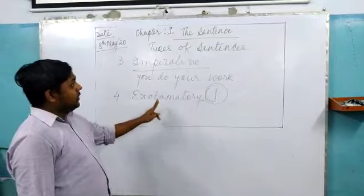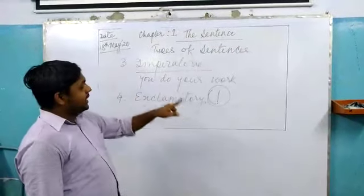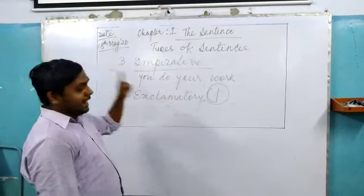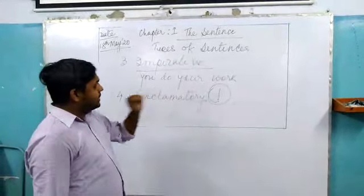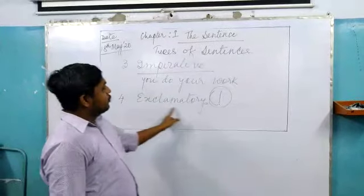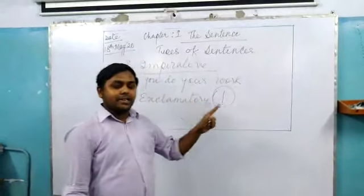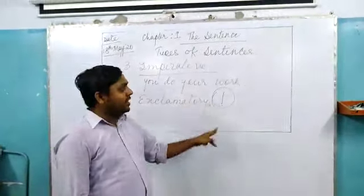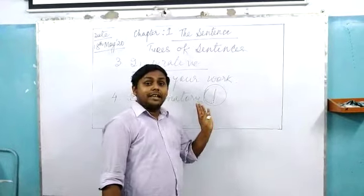So these are the four types of sentences: declarative sentence, interrogative sentence, imperative sentence, and exclamatory sentence. These are the four types of sentences. Thank you.